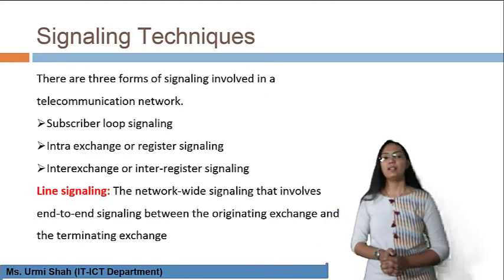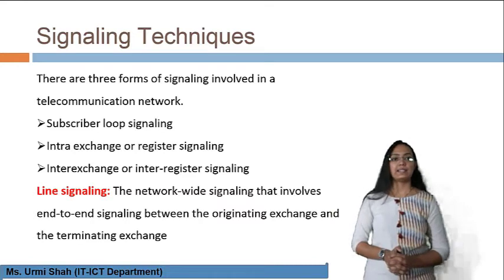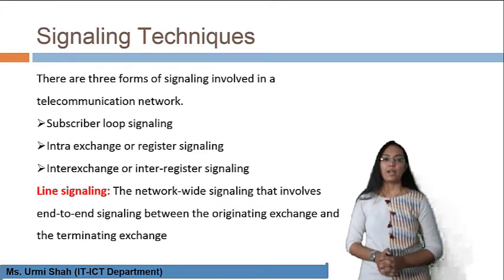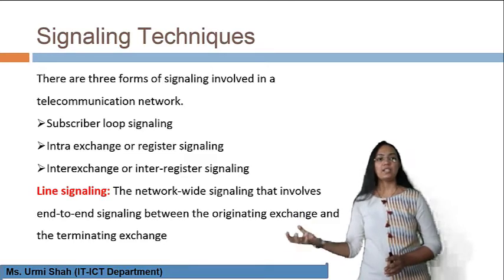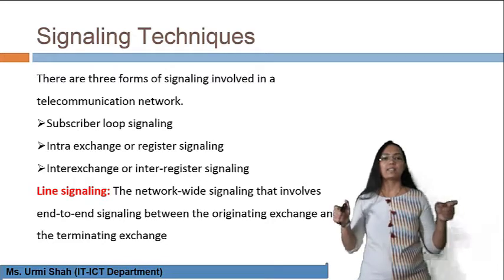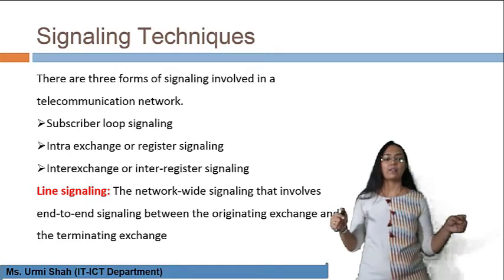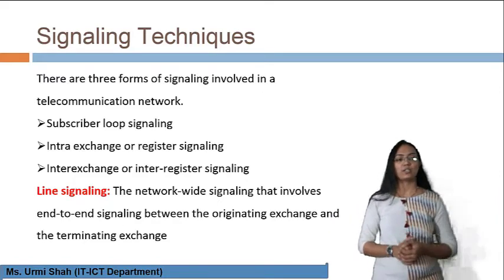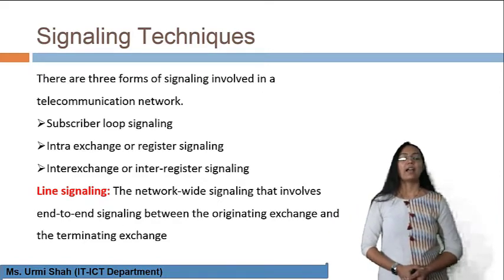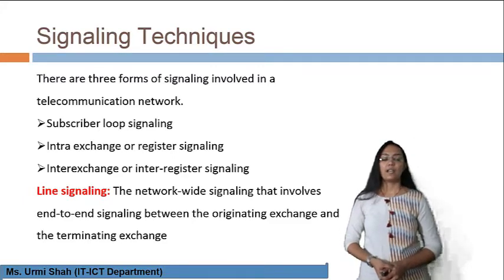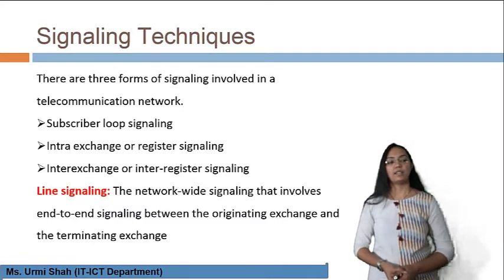Let's see what line signaling is. Line signaling is the network wire signaling that involves end-to-end signaling between the originating exchange and the terminating exchange. In short, it is the signaling scheme where there is a transmission of signal from end to end, from source to destination, and it is the most basic usage in a telecommunication network.